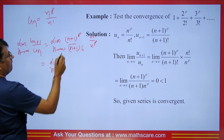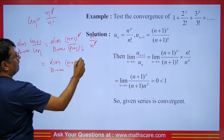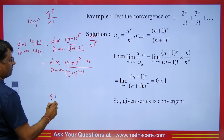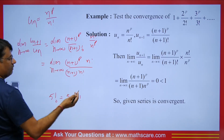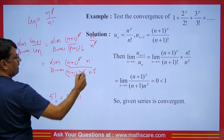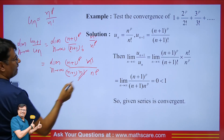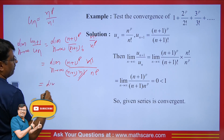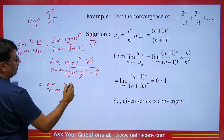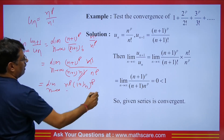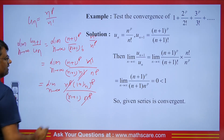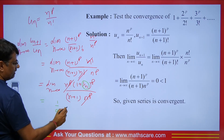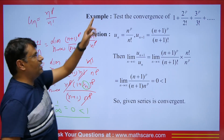Taking limit n tends to infinity, we have (n+1)^p upon (n+1) × n^p. Taking n as a common factor from (n+1)^p gives n^p × (1 + 1/n)^p, so n^p terms cancel. As n tends to infinity, 1/n tends to 0, giving the limit equals 1/(infinity) = 0, which is less than 1. So this series is convergent.